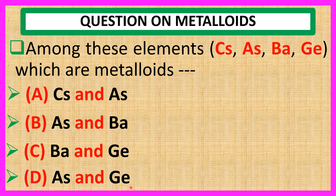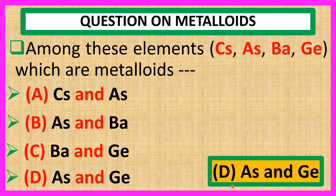The answer is D, As and Ge. Arsenic, As, and germanium, Ge, are metalloids. These two elements have properties of both metals and non-metals, so they are called metalloids. Thank you for watching this video.